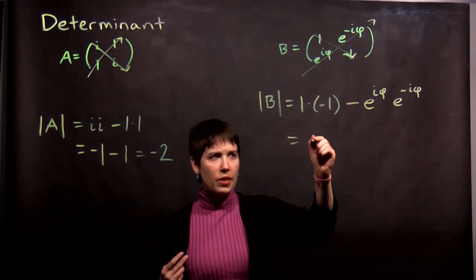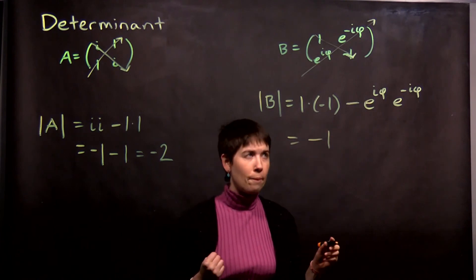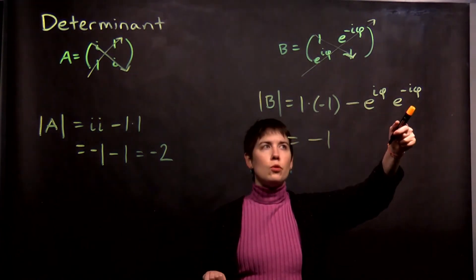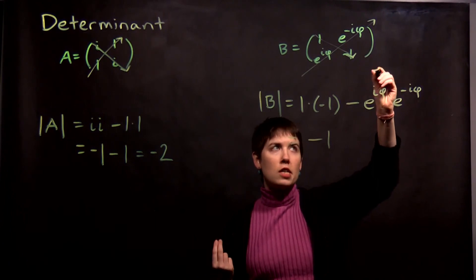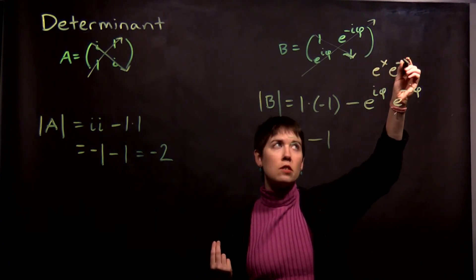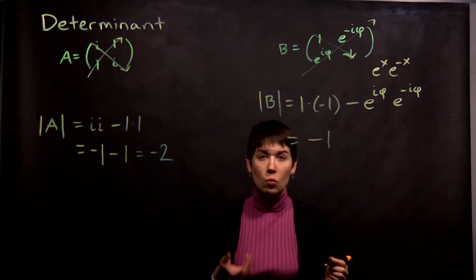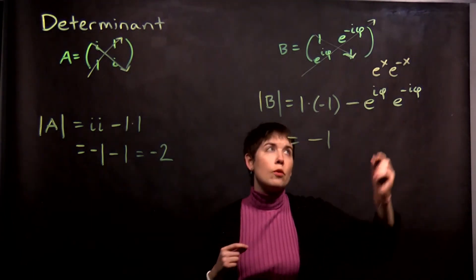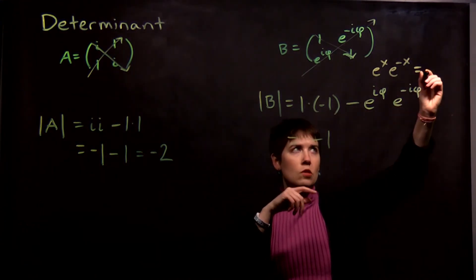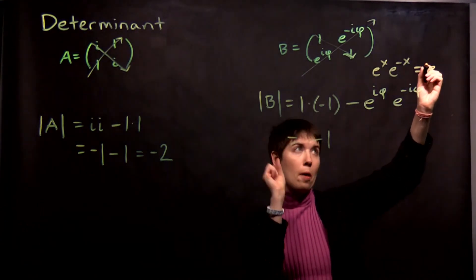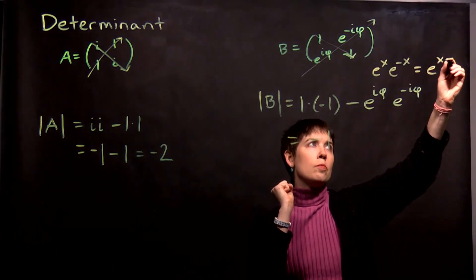So, 1 times negative 1 is negative 1. Now what is this equal to? Whenever we have something that's of the term of like e to the x and e to the minus x, that actually simplifies to 1. One of the ways that you can remember that is that we're allowed to combine exponents like this into a sum.